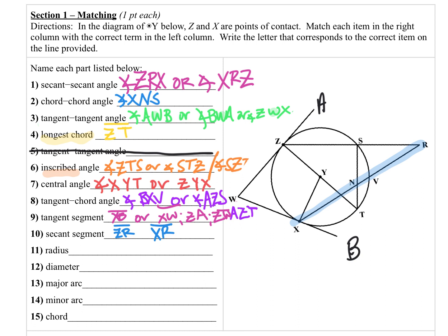The radius connects the center of the circle to a point on the circle, so it starts at Y and goes to X, or Y to Z, or Y to T. Any of those would be fine: YX, YT, or YZ — you can switch the order. The diameter is our longest chord, same thing we've already talked about, just with different language. Our diameter is ZT.